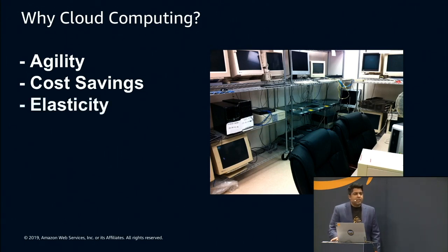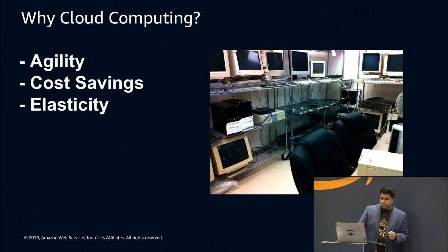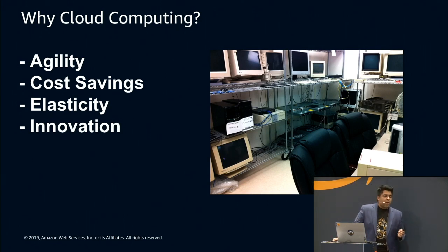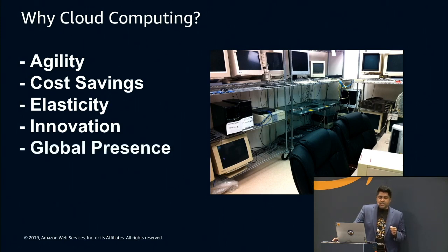Next is elasticity — with AWS, you no longer have to provision machines for peak business activity. You can provision only what you need when you need it. And faster innovation: with AWS or cloud in general, you no longer have to worry about undifferentiated heavy lifting when it comes to managing infrastructure. Let AWS take care of that so you can focus on what you're working on in your organizations. Finally, the last major benefit is global presence — with a click of a button, you can deploy applications throughout the world.